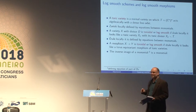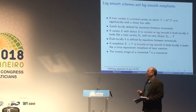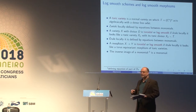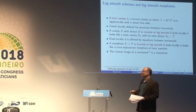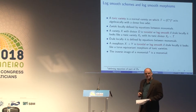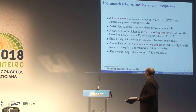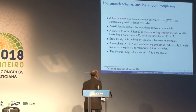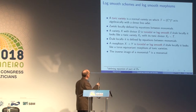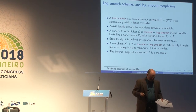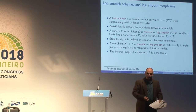A morphism between toroidal varieties is toroidal or logarithmically smooth if étale locally it looks like a torus-equivariant dominant morphism of toric varieties. These are characterized by the statement that when you pull back a monomial on Y it becomes a monomial on X, where a monomial is a function whose vanishing locus is supported on the boundary.